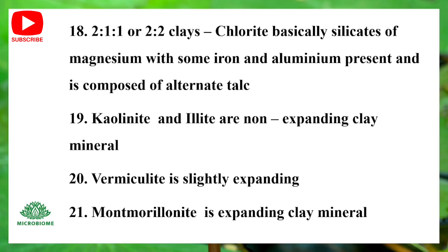2:1:1 or 2:2 clays — Chlorite — are basically silicates of magnesium with some iron and aluminium present, composed of alternating layers. Kaolinite and Illite are non-expanding clay minerals. Vermiculite is slightly expanding. Montmorillonite is an expanding clay mineral.